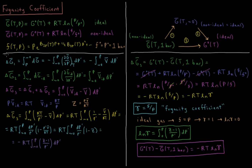We're going to look at a thermodynamic cycle, similar to what we did for the entropy correction for the standard state. We consider the molar Gibbs energy at a given temperature and one bar for a non-ideal gas, and look at the change in Gibbs energy as we go to the standard state — one bar at the same temperature — but for an ideal gas.